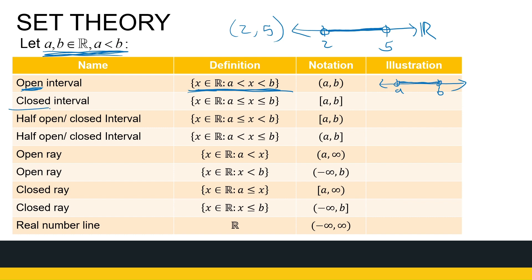A closed interval is when those two numbers are included — for example, 2 to 5. Going from A to B but including them, so I color them in on the number line. That's all the real numbers from A to B. We also get variations where the left-hand side is open and the right-hand side is closed, or vice versa.